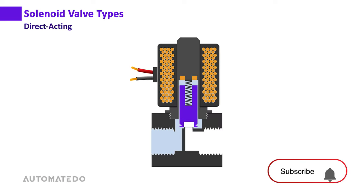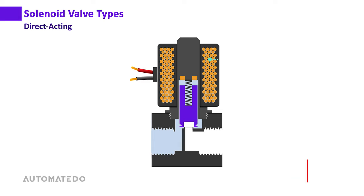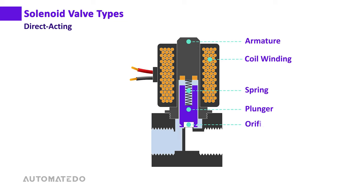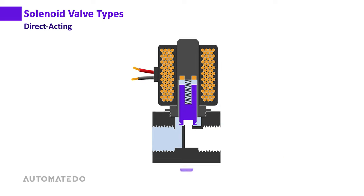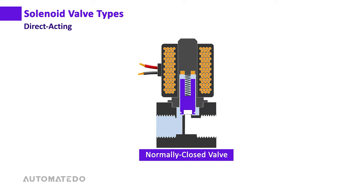The main components of the direct acting solenoid valve are the coil winding, armature, spring, plunger, orifice, and valve body. For a normally closed valve, in the rest position the spring pushes down the plunger to effectively block the orifice and prevent the media flow from entering.